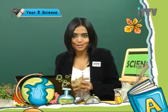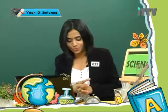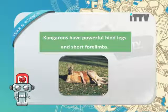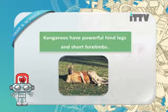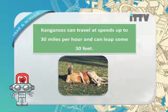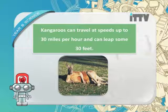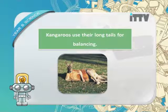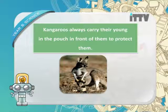Kangaroos have powerful hind legs and short forelimbs. They can travel at speeds up to 30 miles per hour and can leap some 30 feet. Kangaroos use their long tails for balancing. Kangaroos always carry their young in the pouch in front of them to protect them. Wherever the adult kangaroo goes, the young follows.